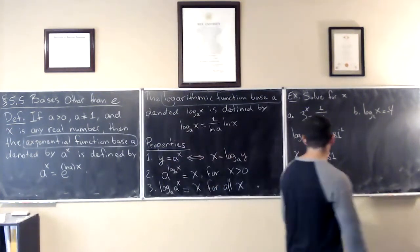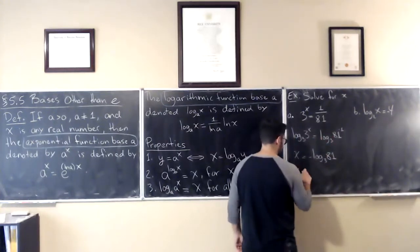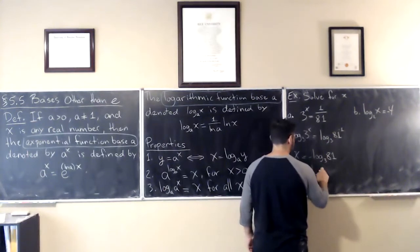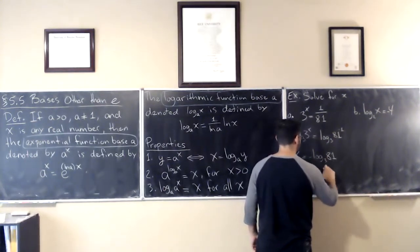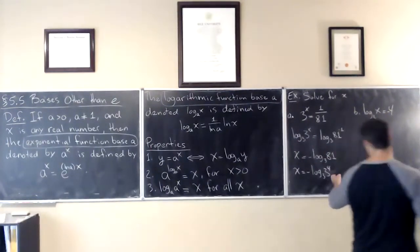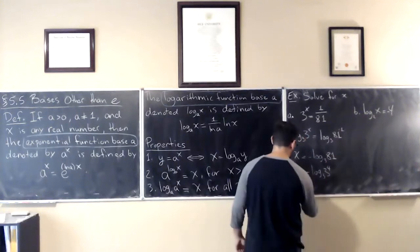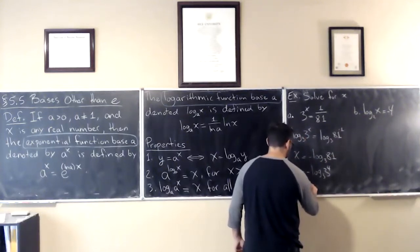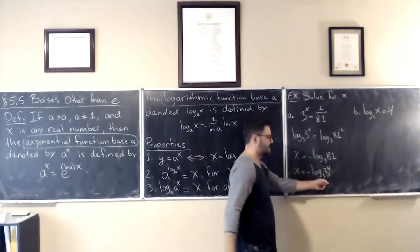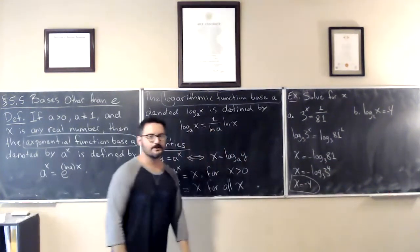It will happen to be 4 because I'll just show you: this is negative log base 3 of 3 to the power of 4, right? 3 to the power of 4 is 81. Bring down the 4. We have x equal to negative 4 times log base 3 of 3, which is just 1, and then you'd be done.